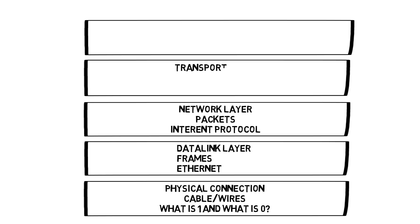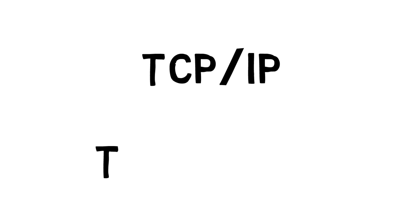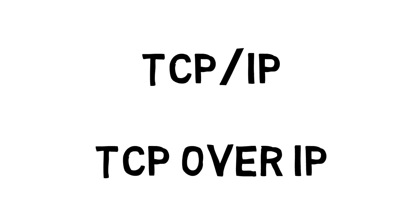Up until now, all these layers — the physical layer, the data layer, the network layer — are all connectionless, which basically means they just describe how you send a packet without establishing a persistent connection to a remote machine. To get the idea of an actual connection — like a phone call where you ring somebody and you're in a conversation with them — you need to go up to the next layer: the transport layer. This is where we get to TCP, the Transmission Control Protocol, which runs over IP.